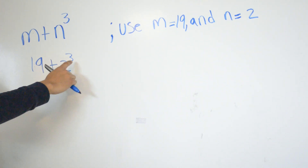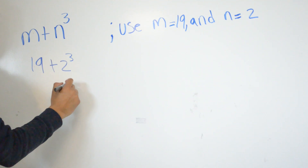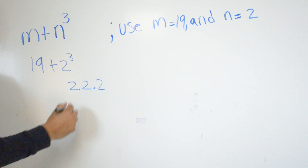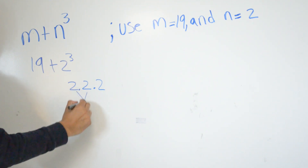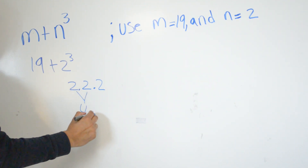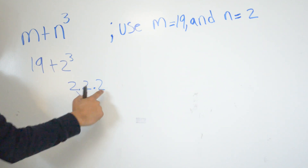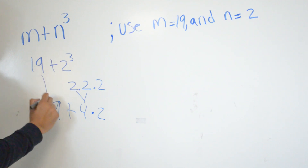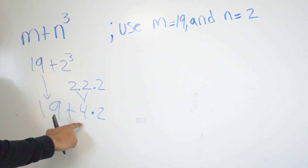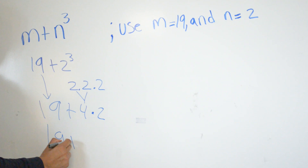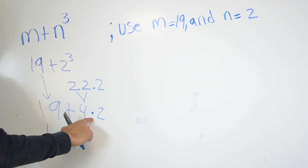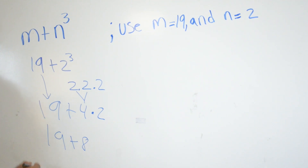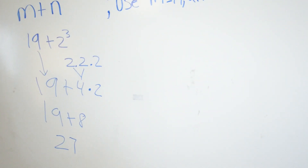Now 2 to the third power is the same as 2 times 2 times 2. We do 2 times 2, which is 4, and 4 times 2 is 8. Bringing down the 19, we get 19 plus 8, which is going to be 27.